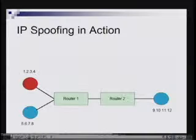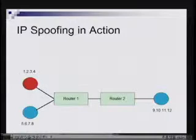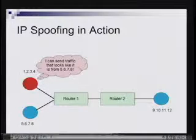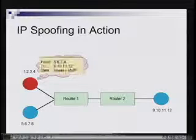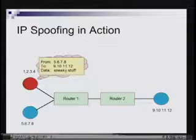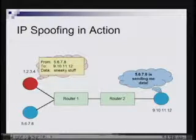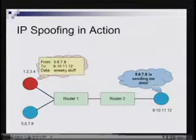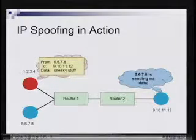To put IP spoofing in action: this host on the left, which is 1.2.3.4, wants to send a packet that looks like it came from 5.6.7.8, and it sends it to 9.10.11.12. When 9.10.11.12 receives this packet, it has no idea who sent it — it thinks 5.6.7.8 sent the packet. If the host on the right actually tries to communicate back to the sender, the reply would go to 5.6.7.8. That's essentially the problem of spoofing.